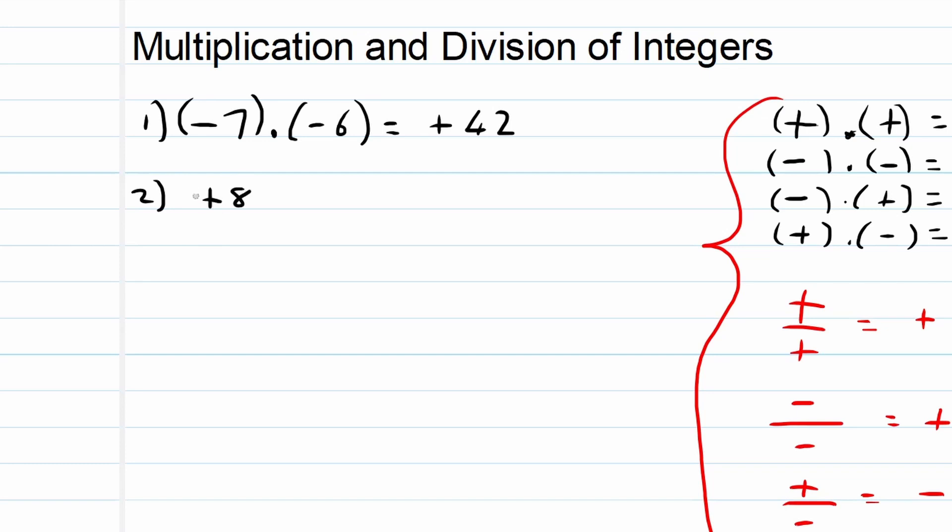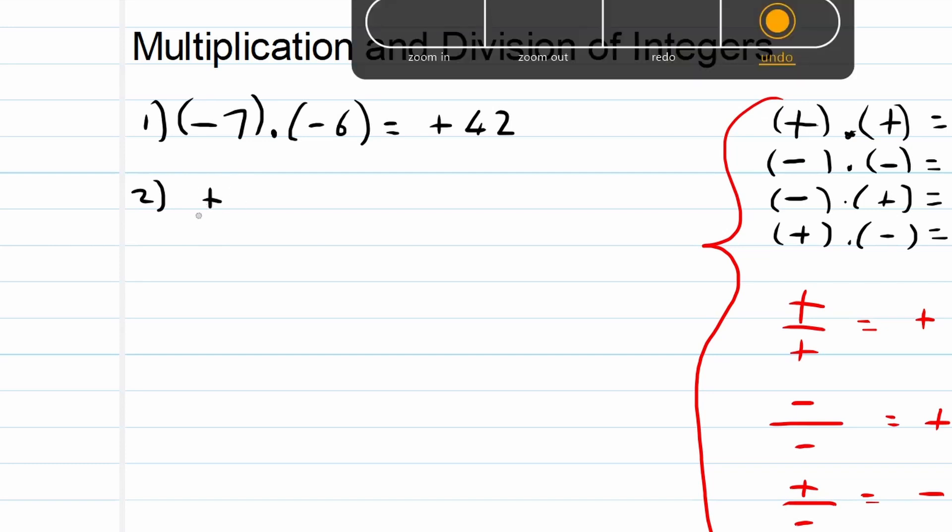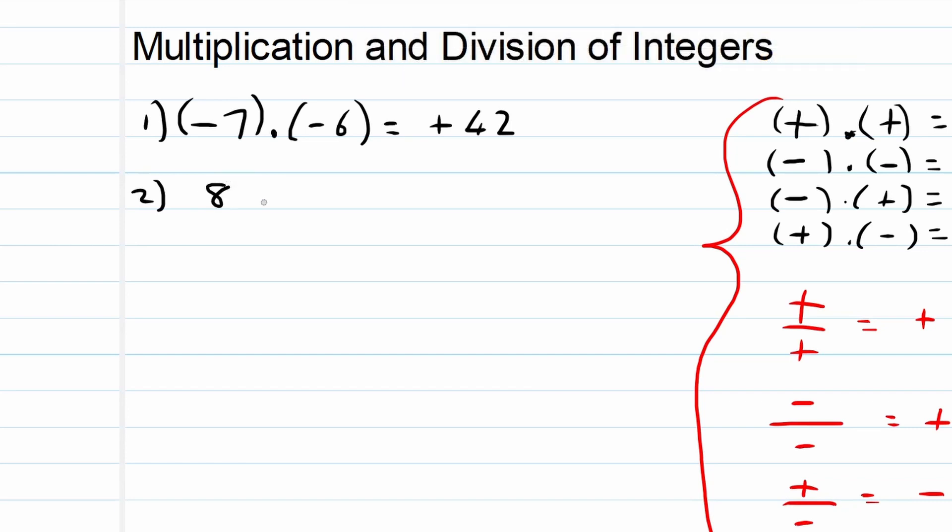Plus eight—I don't need to show the eight, I could have just said eight as well, because that automatically means a positive times negative five. Now the positive times the negative is equal to a negative, and eight times five is equal to 40.